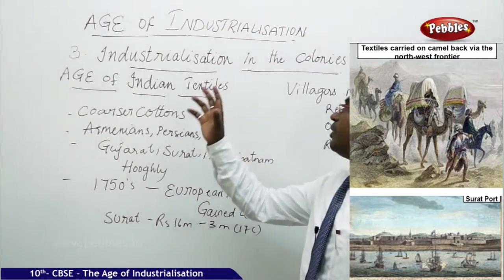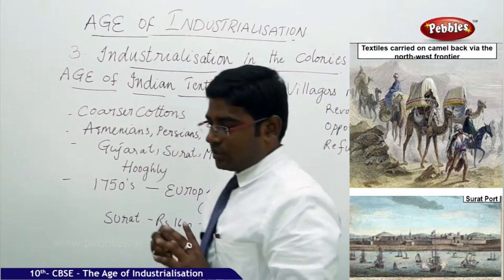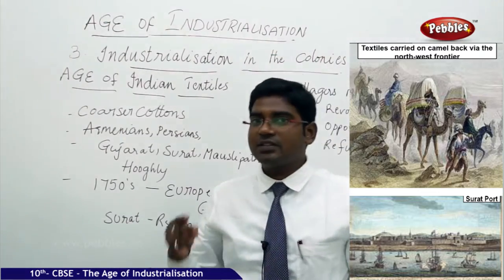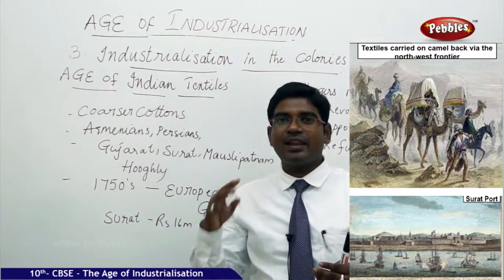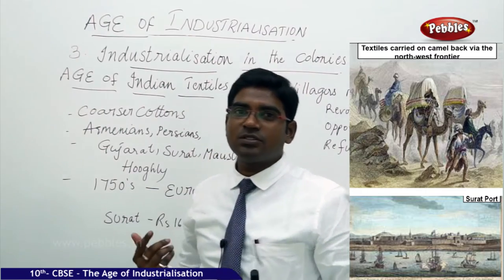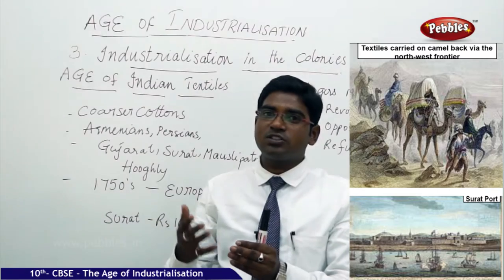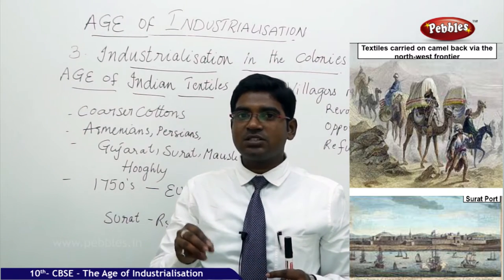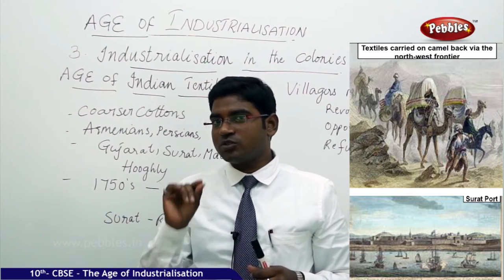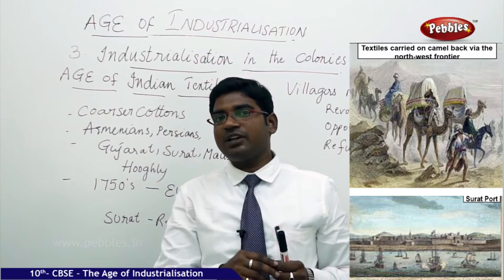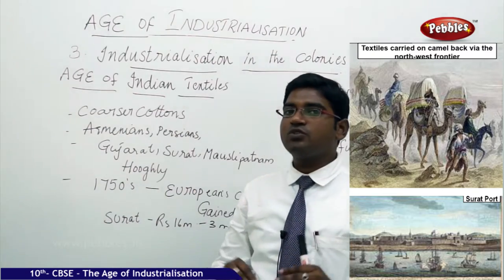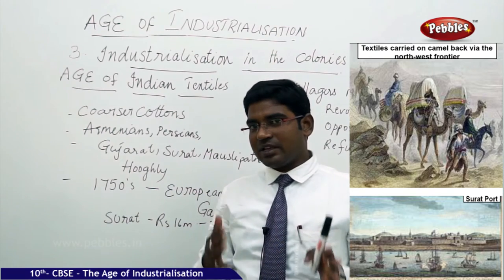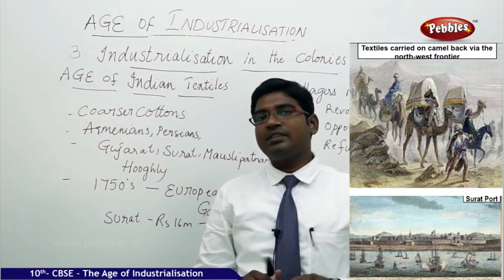Now let us see how industrialization developed in the colonies, specifically in India. In the previous part of the lesson we analyzed the different factors and reasons before industrialization, the proto-industrialization period, the setting up of factories, and the discovery of new technologies. This discussion will be limited and restricted to the context of Indian development, specifically on the textile industries — how the Indian textile industries emerged through industrialization, whether they were favored or degraded.